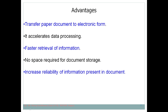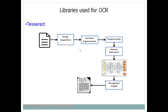OCR increases the reliability of information present in documents. For example, if there is a natural calamity such as a fire in an office, all physical documents could be destroyed. But if documents have been scanned and stored elsewhere digitally using OCR, the information is preserved. So OCR helps increase both the accessibility and the reliability of stored information.